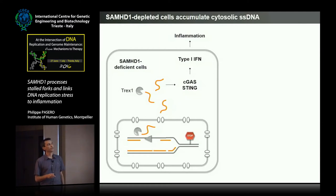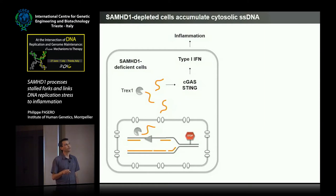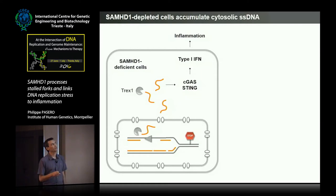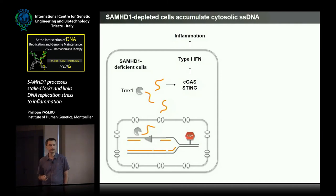We decided to look at that directly. The model would be that when SAMHD1 is not there, for some reason there is an aberrant processing of the fork, there is release of single-stranded DNA in the cytosol, and this would be sensed by sensors of the innate immune system, inducing a type 1 interferon response and inflammation.